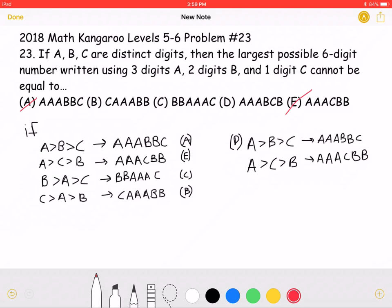If B is greater than A, which is greater than C, we would have BBAAAC, which is answer choice C. And that is also incorrect.